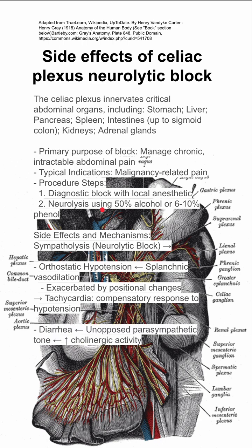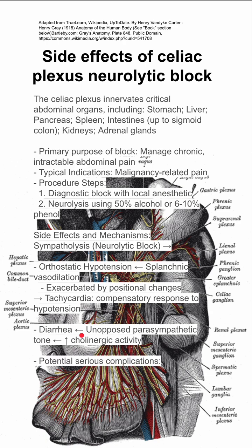You can also get diarrhea from the unopposed parasympathetic tone. This increased cholinergic activity causes parasympathetic tone which leads to diarrhea, and because you have sympatholysis you don't have the opposing autonomic neural pathway that would cause normal stools or constipation.